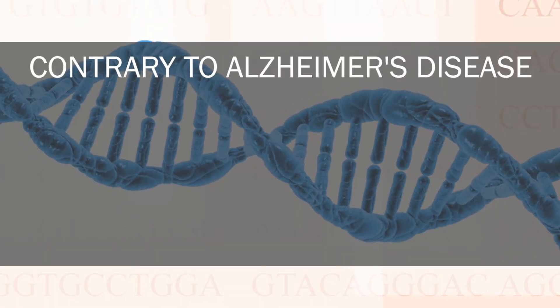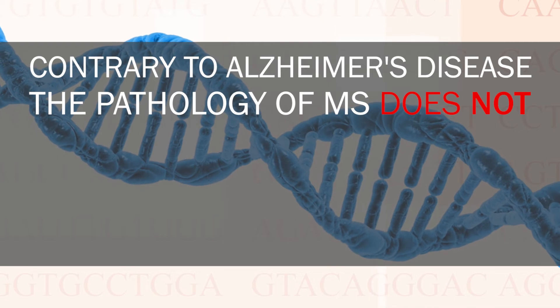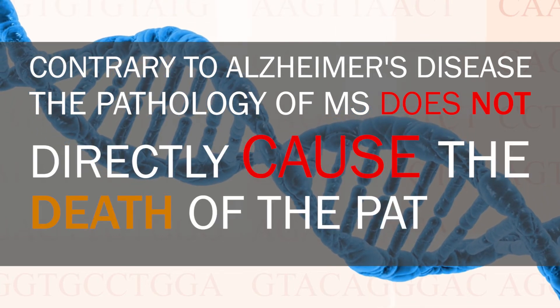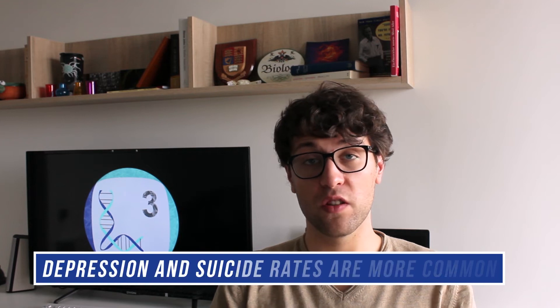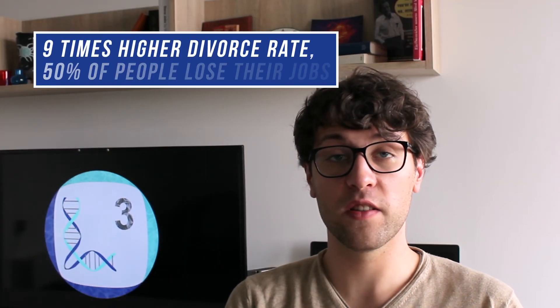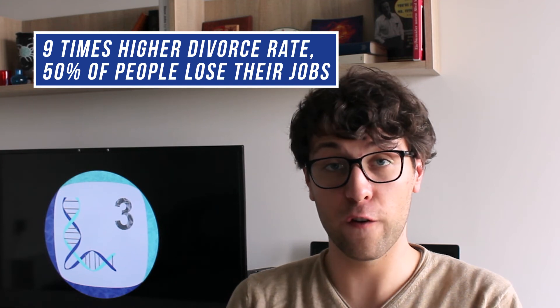Contrary to Alzheimer's disease the pathology of multiple sclerosis does not directly cause the death of the patient. Nonetheless multiple sclerosis is a tragic disease as people suffer in various ways. Within 20 years after the initial diagnosis of the disease half of the patients need support walking. Moreover depression is three times more common and suicide rate is doubled. The divorce rate is nine times higher and about 50% of people lose their jobs within the first five years after the initial diagnosis.